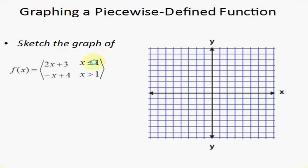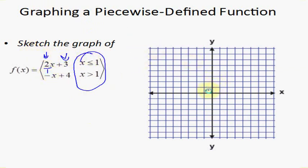Now let's talk about piecewise functions. To do piecewise functions, you graph them first and then look at the domain. The first line has a y-intercept at 3 and a slope of 2, so I start at 3 and go up 2, right 1. For the other function, we start at a y-intercept of 4 and slope of -1, going down 1, right 1. Now we have both lines graphed.